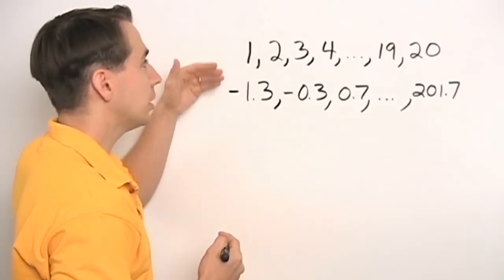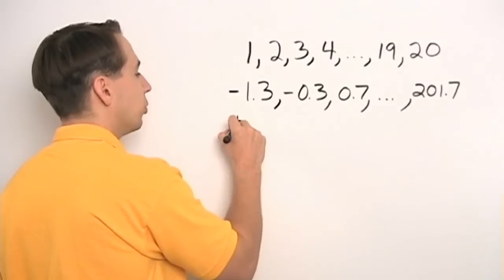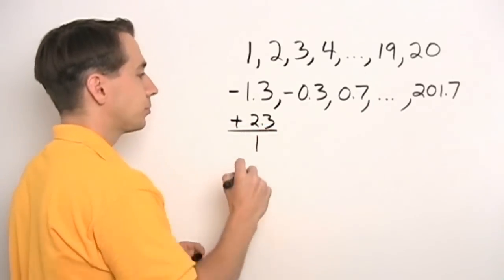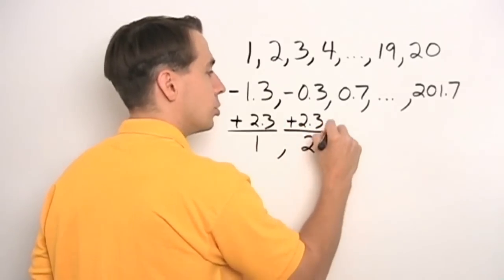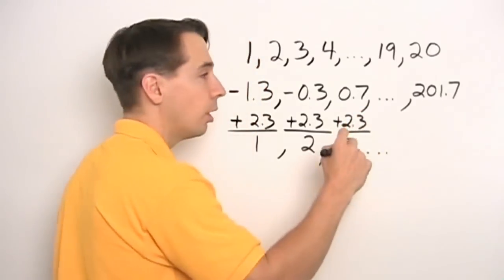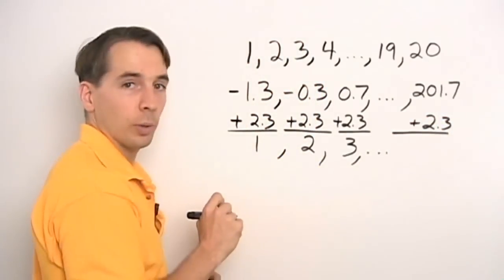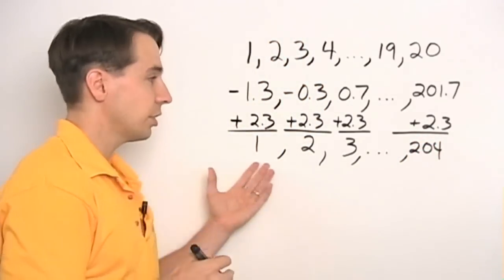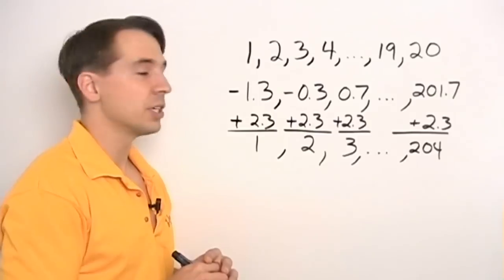Instead, let's do the same thing we did last time — try to make a list that starts from one and goes up one each time. To turn negative one point three into one, we just add two point three, and we get one. When we do the same thing to each of the other numbers, sure enough we get one, two, three, four, and so on. The last number in our list: when we add two point three to two hundred and one point seven, we get two hundred and four. Since there are two hundred and four numbers in this shifted list, there are two hundred and four numbers in the original list. This was essentially the same problem as starting from seventy-three — solved with the same method.